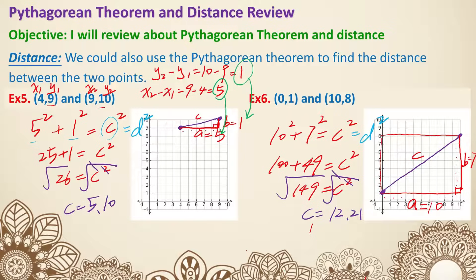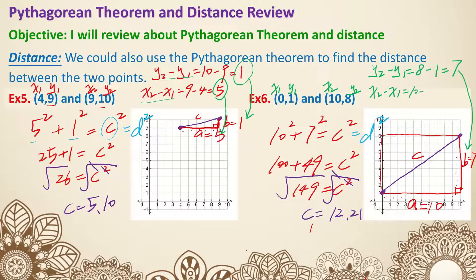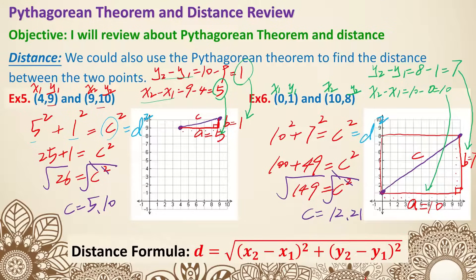You can subtract the coordinates to get A and B. Preferably use the bigger number minus the smaller, but more precisely use y2 minus y1 and x2 minus x1. For example five: y2 minus y1 is 10 minus 9 equals 1 — that's our B; and x2 minus x1 is 9 minus 4 equals 5 — that's our A. For example six: y2 minus y1 is 8 minus 1 equals 7, and x2 minus x1 is 10 minus 0 equals 10. So the distance formula is D equals the square root of (x2 minus x1) squared plus (y2 minus y1) squared.